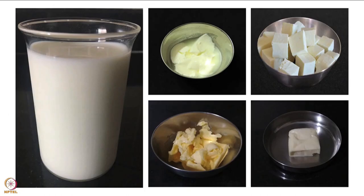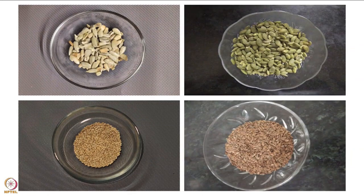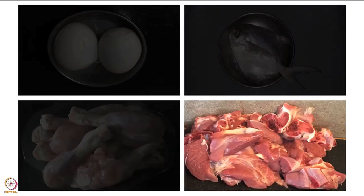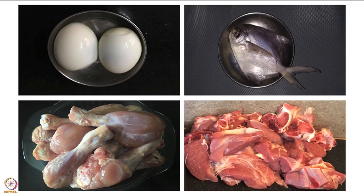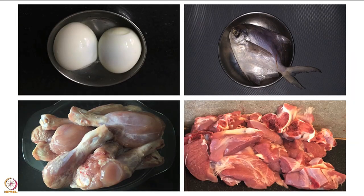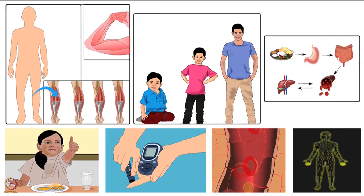Milk and milk products, beans, nuts and seeds are good sources of protein. Eggs, fish, chicken and meat are also excellent sources. Absorption of protein from non-vegetarian food is higher than vegetarian food, because non-vegetarian foods have complete proteins. Complete proteins contain all the essential amino acids. More about the importance of protein has been explained in another tutorial.